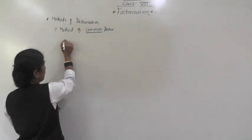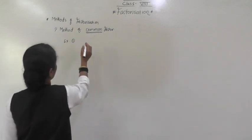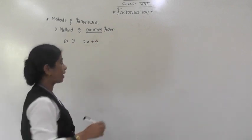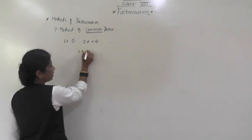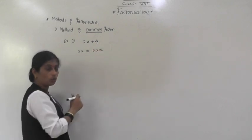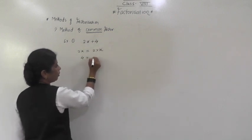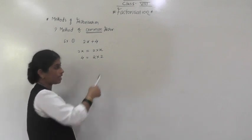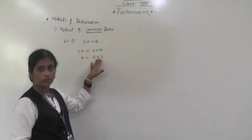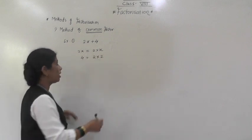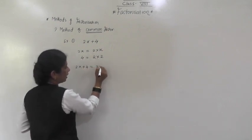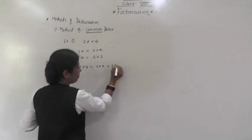The first method is the method of common factor. From the word 'common,' we know we have to select something common from the given expression. For example, take the expression 2x + 4. We write separately: 2x in product form is 2 × x. And the factors of 4 in product form are 2 × 2. So 2x + 4 = 2 × x + 2 × 2.